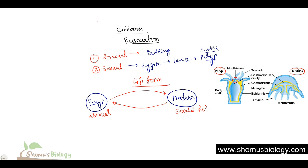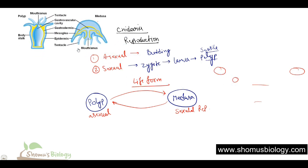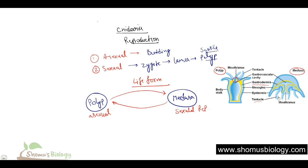They have a body stalk with tentacles, gastrovascular cavities, and their gastrodermis is the layer covering the gastrovascular cavity. Mesoglea are a type of cell, and the epidermis is the outer membrane layer. During the polyp phase the tentacles are in the upper region of the body; in the medusa phase they are in the bottom part. Development is direct in Hydra and indirect in jellyfish. That is the overall idea regarding Coelenterata or Cnidaria.